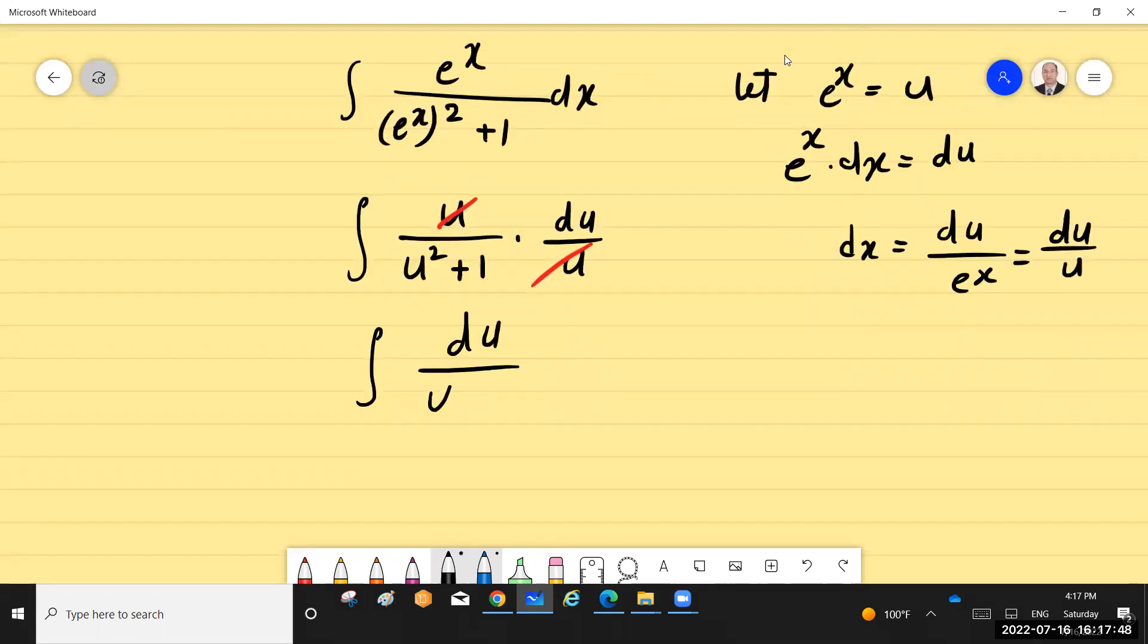over u² plus 1, which is tan inverse of u plus c. By substituting back u equals e to the x, tan inverse of e to the x plus c, and this is...